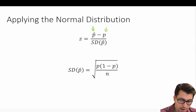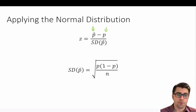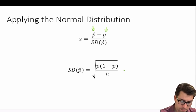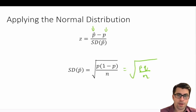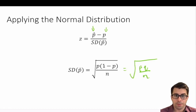How do we calculate the standard deviation of p-hat? That's the square root of p times one minus p, divided by n — or the square root of p times q divided by n — where p is the proportion of our population and q is the complement of the proportion of our population.